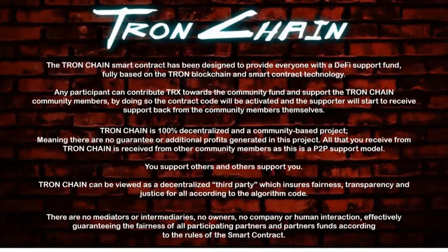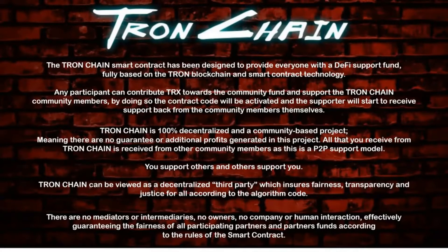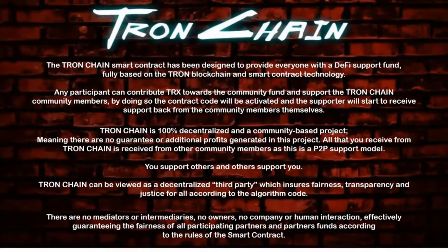The TronChain smart contract has been designed to provide everyone with a defined support fund, fully based on the Tron blockchain and smart contract technology. Any participant can contribute TRX towards the community fund and support the TronChain community members. By doing so, the contract code will be activated and the supporter themselves will start to receive support back from the community. TronChain is 100% decentralized and community-based, meaning there are no guarantees nor additional profits generated in this project.